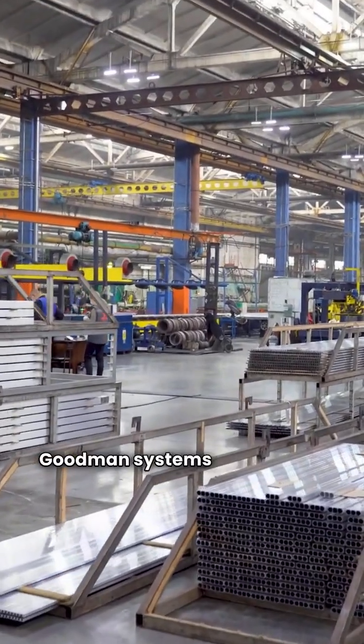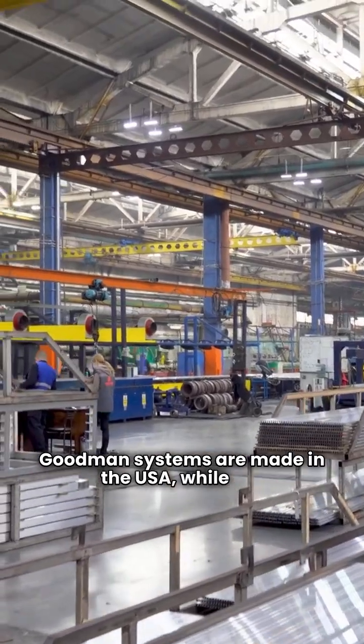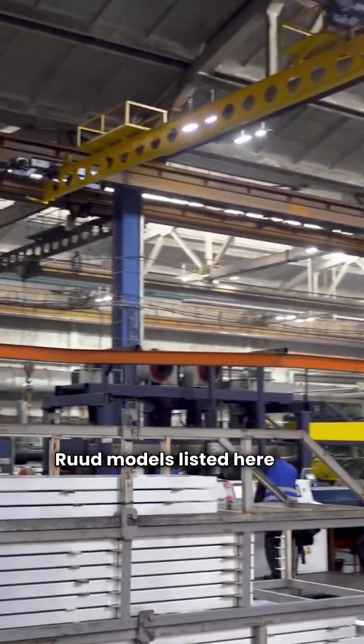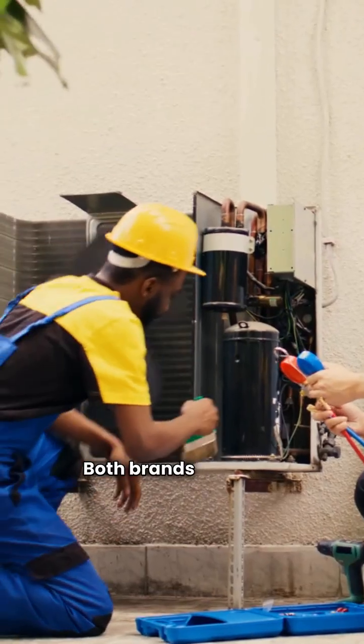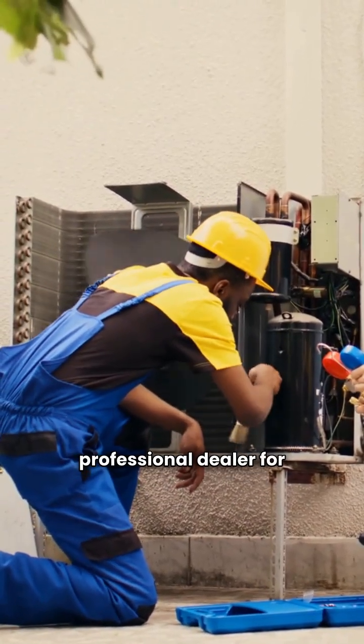Manufacturing. Goodman systems are made in the USA, while the Ruud models listed here are manufactured in Mexico. Both brands require a professional dealer for installation.